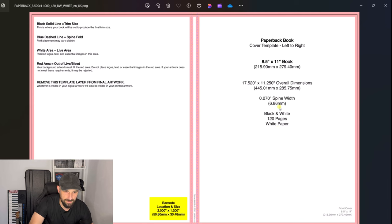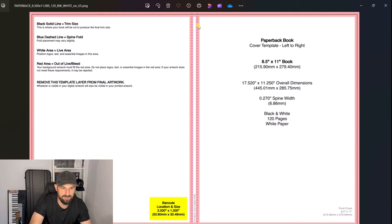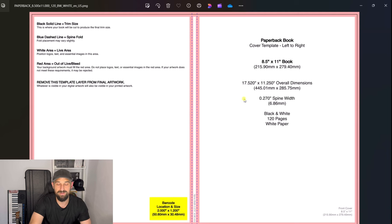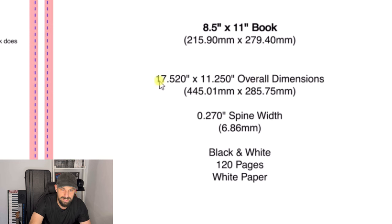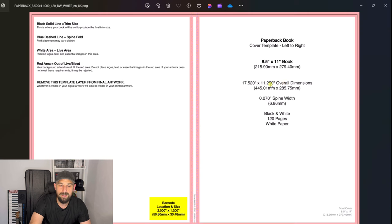This is what the template looks like — the basic book cover layout. When designing we want to stay away from the red zones because that's where the design could get potentially cut off. We also have the barcode area. The most important thing is the overall dimensions, which are 17.52 by 11.25 inches. When we go over to Kittle we are going to create a design which is that size.